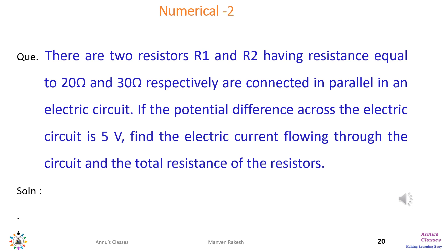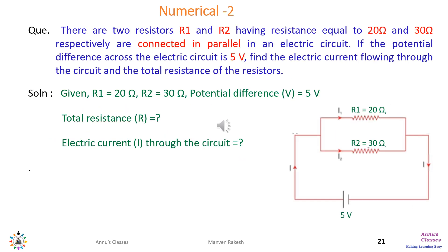Now for Numerical Problem 2: there are two resistors R1 and R2 having resistance 20 ohms and 30 ohms respectively, connected in parallel in an electric circuit. If the potential difference across the circuit is 5 volts, find the electric current flowing through the circuit and the total resistance. Given: R1 equals 20 ohms, R2 equals 30 ohms, V equals 5 volts.